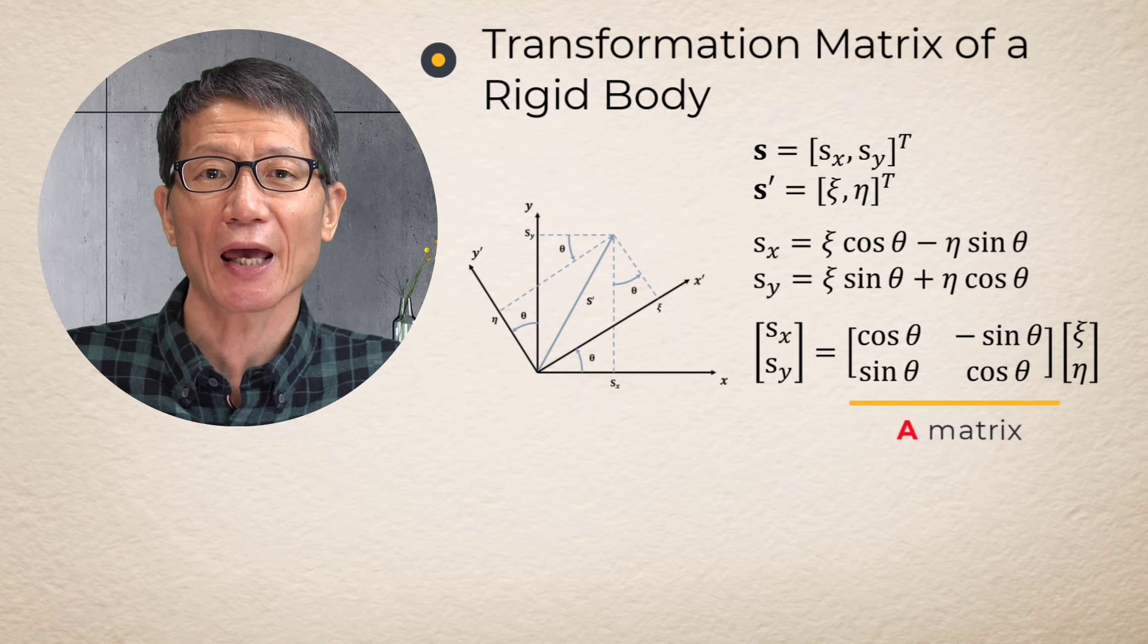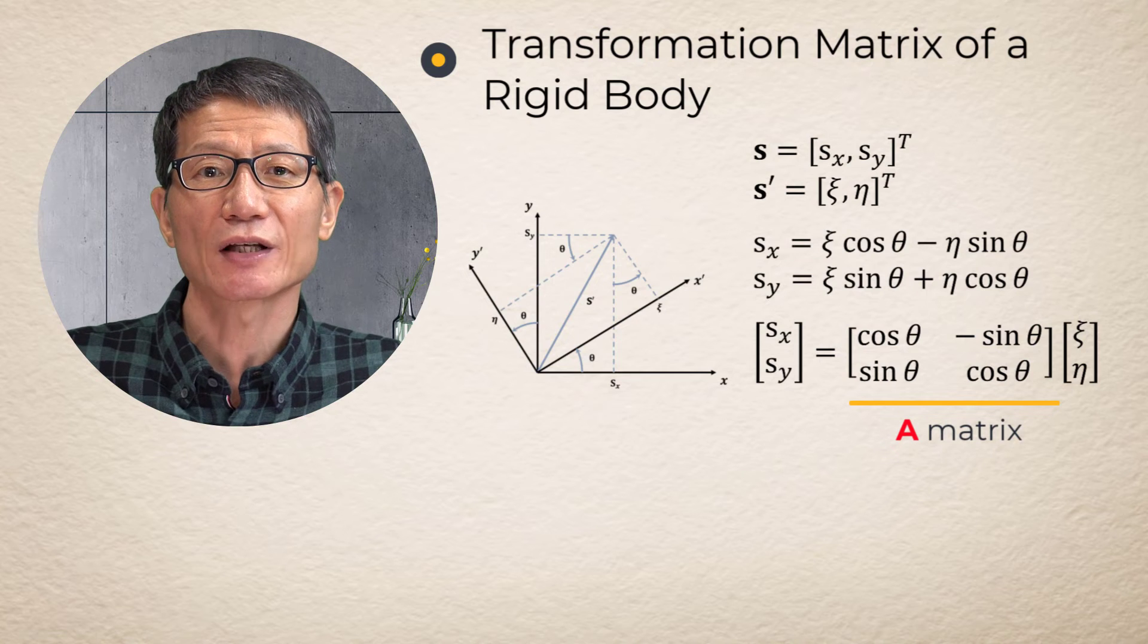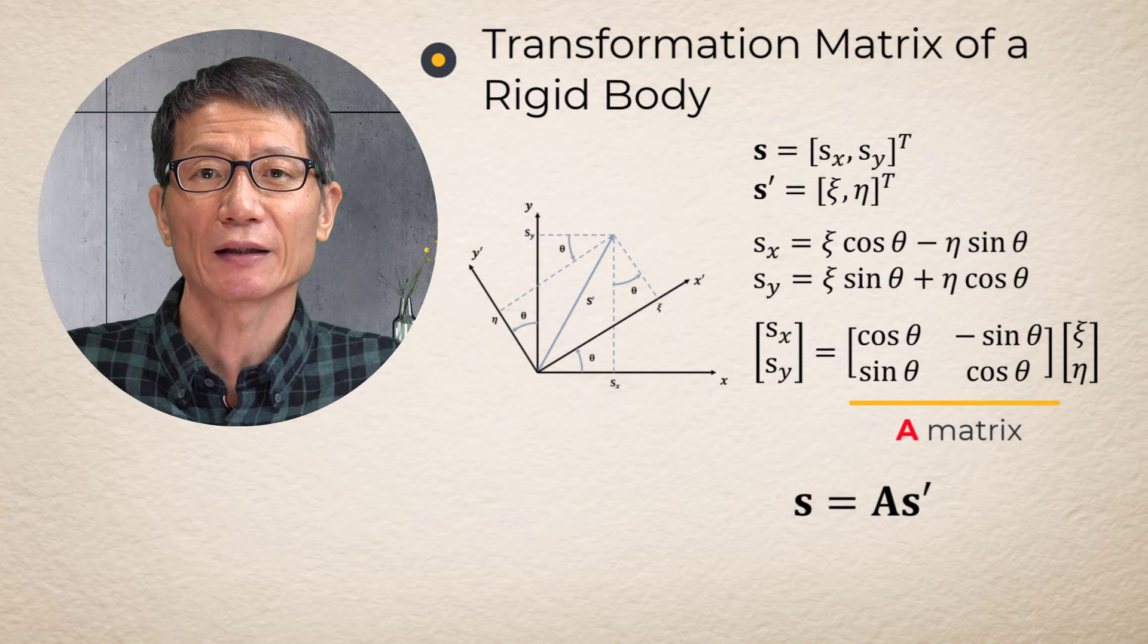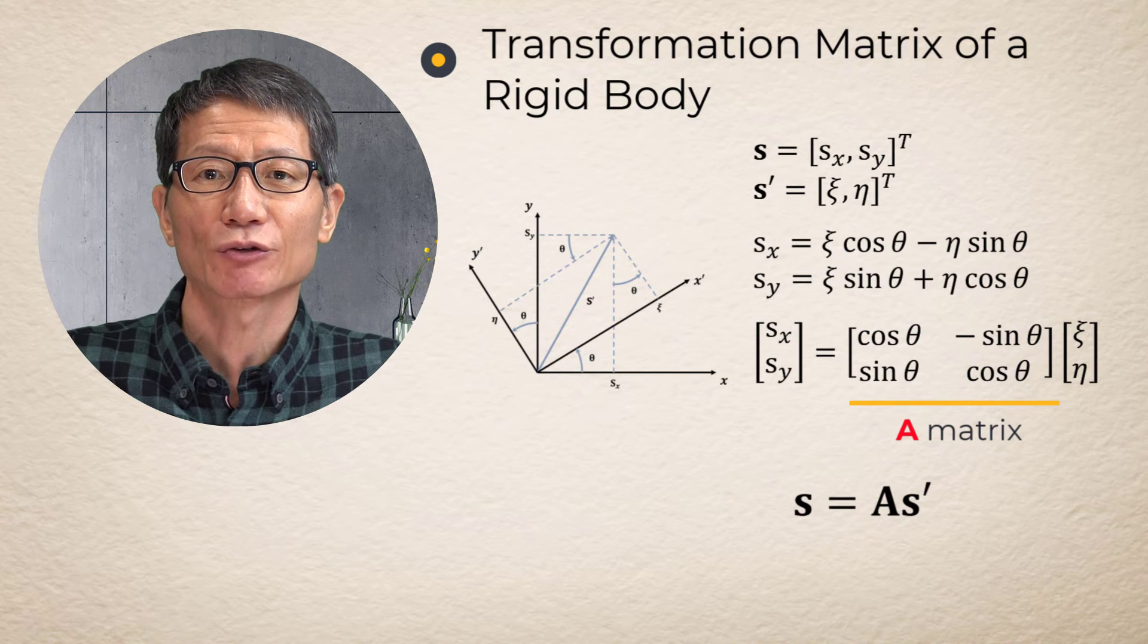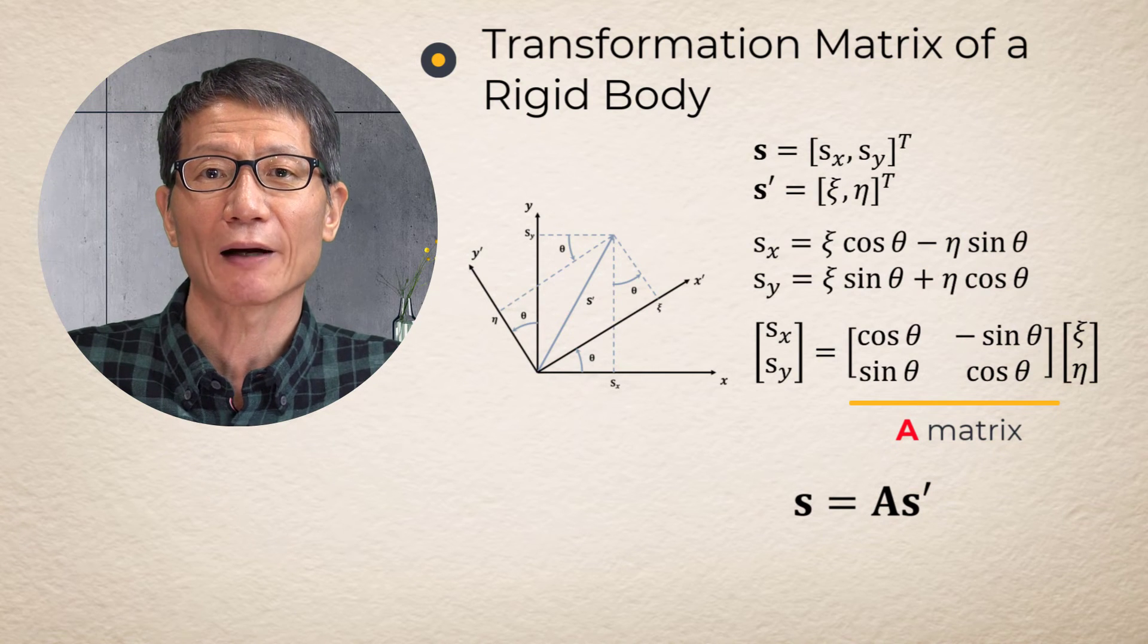Matrix A is defined as transformation matrix and is used to transform a vector in the body reference frame to the corresponding vector in the global reference frame.